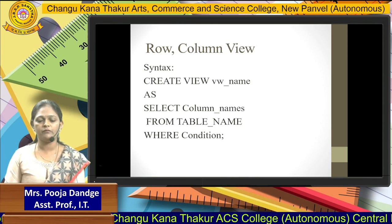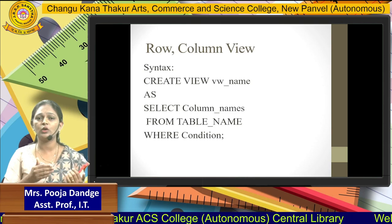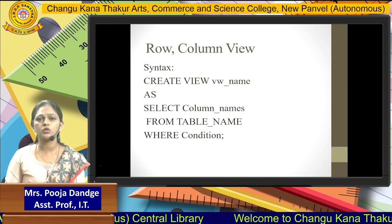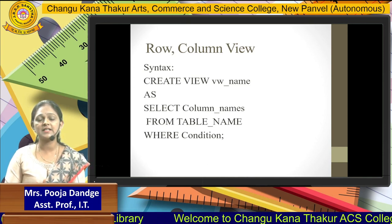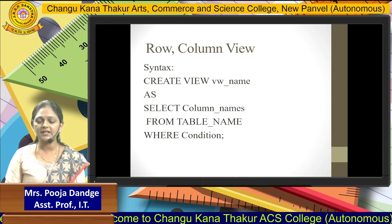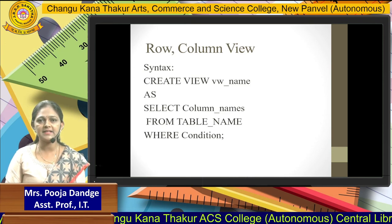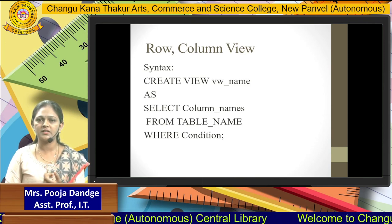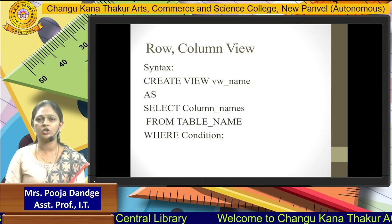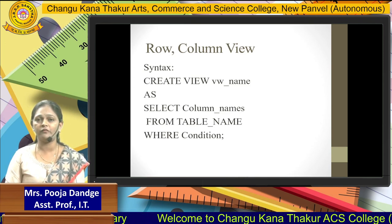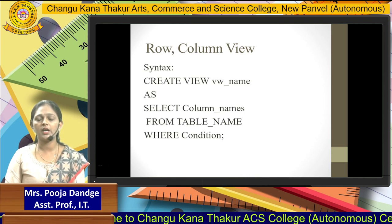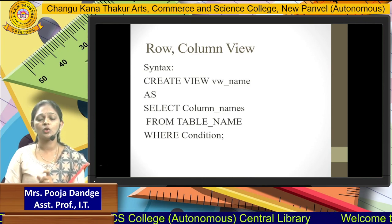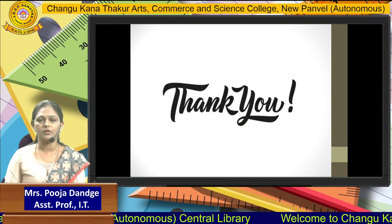The row-and-column view is a combination of the vertical view and horizontal view. Here we restrict on both rows and columns. The syntax is: CREATE VIEW view_name AS SELECT column_name FROM table_name WHERE condition. In this type of view, the WHERE condition is compulsory because we must make a restriction on the row records using the WHERE clause. This is the row and column view. Thank you everyone.